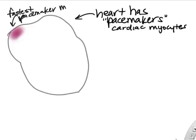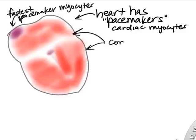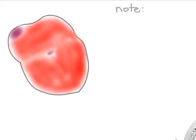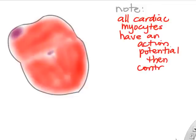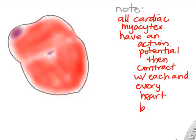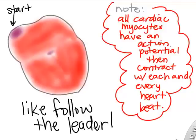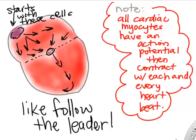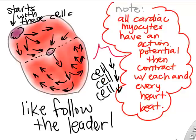The fastest pacemaker myocytes are found in the right atrium and they pace the heart. All cardiac myocytes have action potentials and contract with each heartbeat — every myocyte gets activated every time the heart beats, like follow the leader. It starts in the right atrium, action potentials spread through specialized regions down to the ventricles, and then all ventricular myocytes activate each other cell to cell, so every cell has an action potential and contracts.